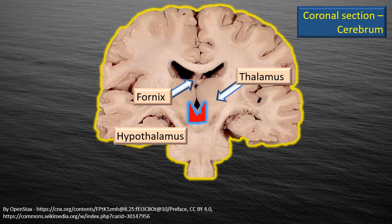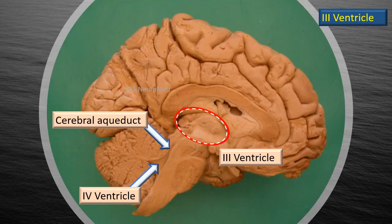The large egg-shaped area supralateral to the hypothalamus is the thalamus. Right above, on the roof of the third ventricle, is the fornix. Next, we are back to the mid-sagittal section. The red-white oval dashed area is the rough location of the third ventricle. Lower down, you can see it is continuous with the fourth ventricle through the cerebral aqueduct, which passes through the midbrain.